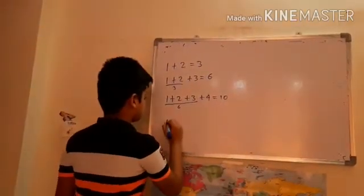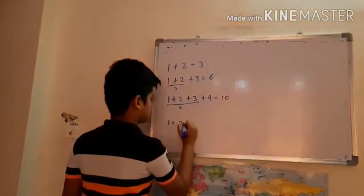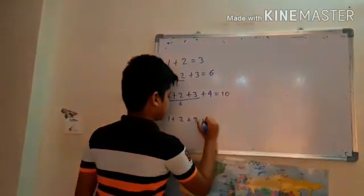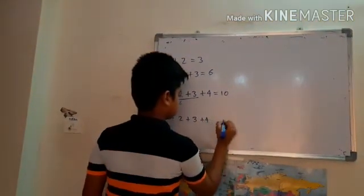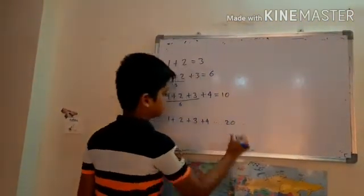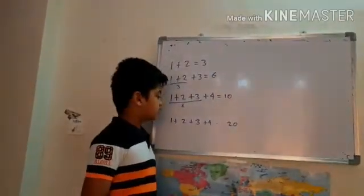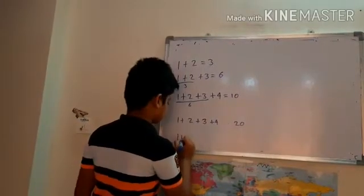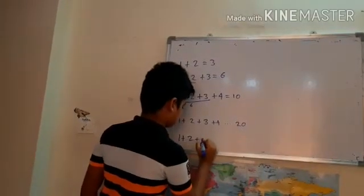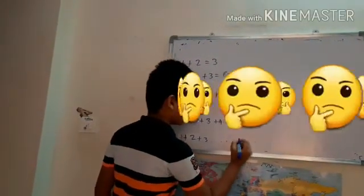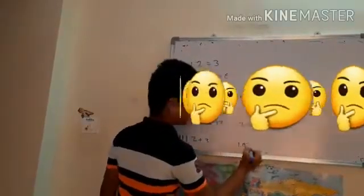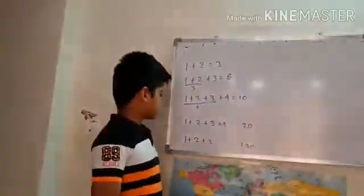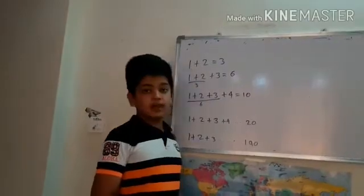But do you know what is 1 plus 2 plus 3 plus 4 plus so on plus 20? Well, we can give a try but it's a bit hard to calculate. Do you know what is 1 plus 2 plus 3 plus so on plus 190? Well, this is hard to calculate. So we have a formula.